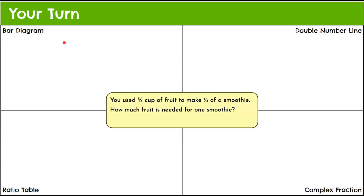It's your turn. Here is your real-world problem: you use three-fourths of a cup of fruit to make one-third of a smoothie — find out how much fruit is needed for one smoothie. Model this using a bar diagram, a double number line, a ratio table, and a complex fraction. Pause, do your best work, and then come back to see mine. Good luck.